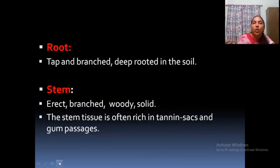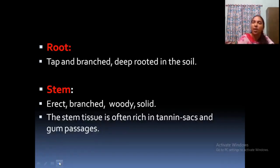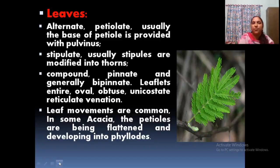Root is a tap root system, highly deep-rooted, because most of them live in dry conditions. Stem is erect, branched, and woody. Stem tissue is rich in tannin sacs and gums. Acacia species are used for gums; tannins and gums storage structures are present in the plant tissues.